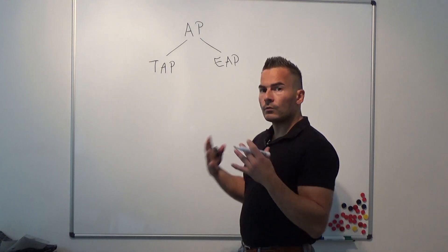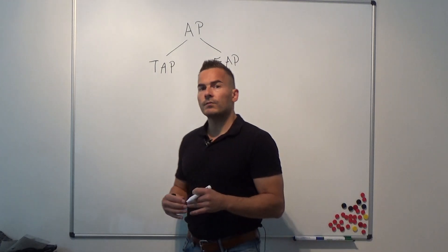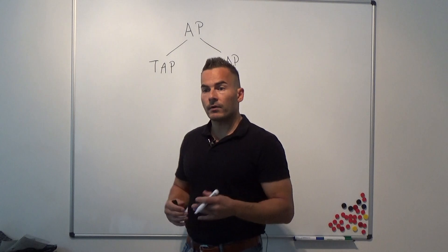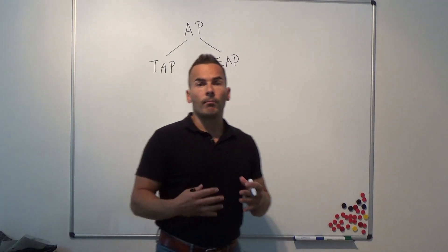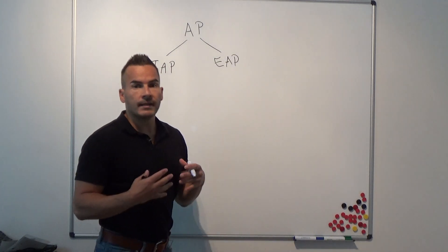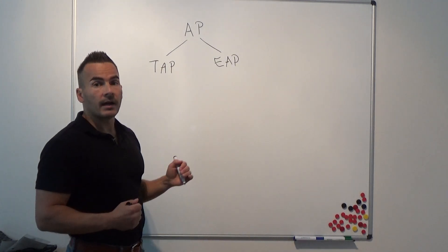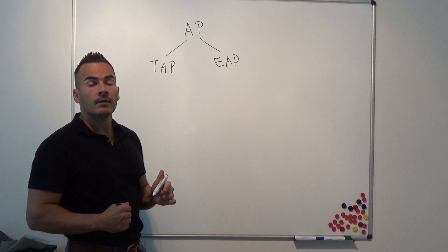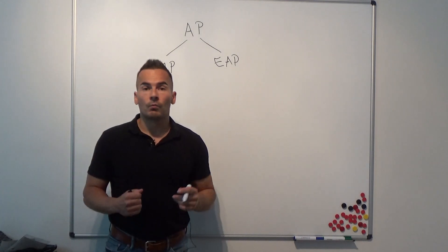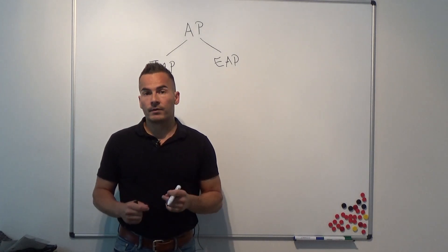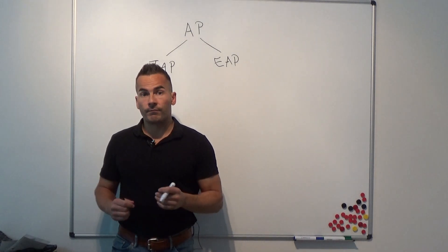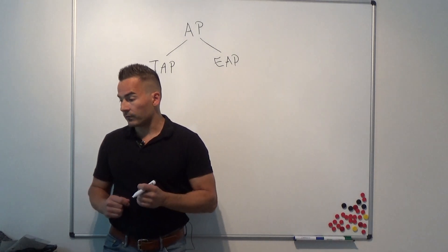In empirical research, we usually apply econometric or statistical methods to explore patterns in assets. This is also what I do mostly in my own research, which is related to empirical asset pricing, and this is what I will cover in these five lectures.